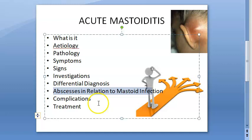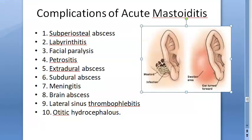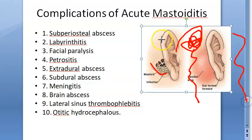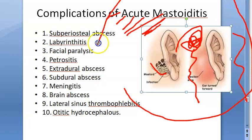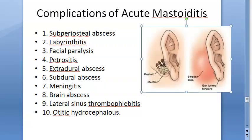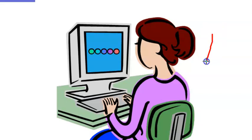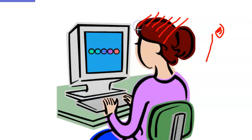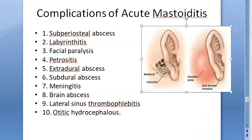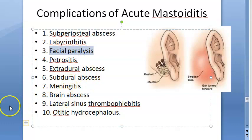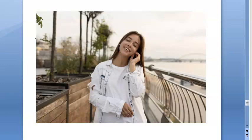Complications of mastoiditis: subperiosteal abscess, labyrinthitis, facial paralysis, petrositis, extradural abscess, subdural abscess, meningitis, brain abscess, lateral sinus thrombophlebitis, and otitic hydrocephalus.